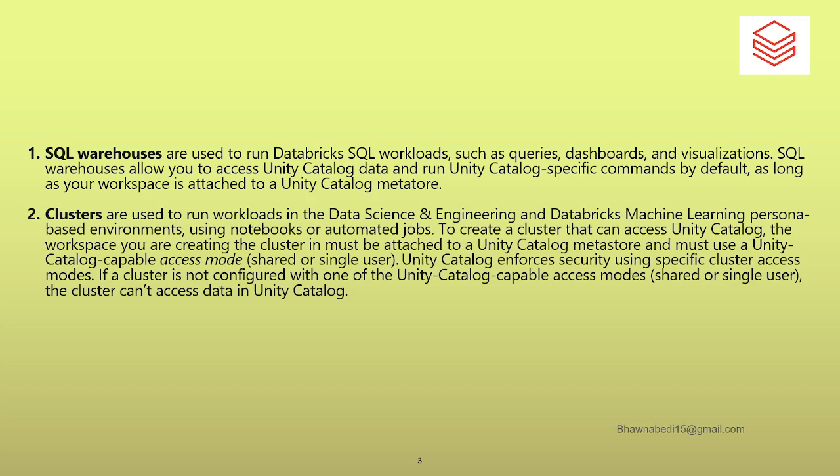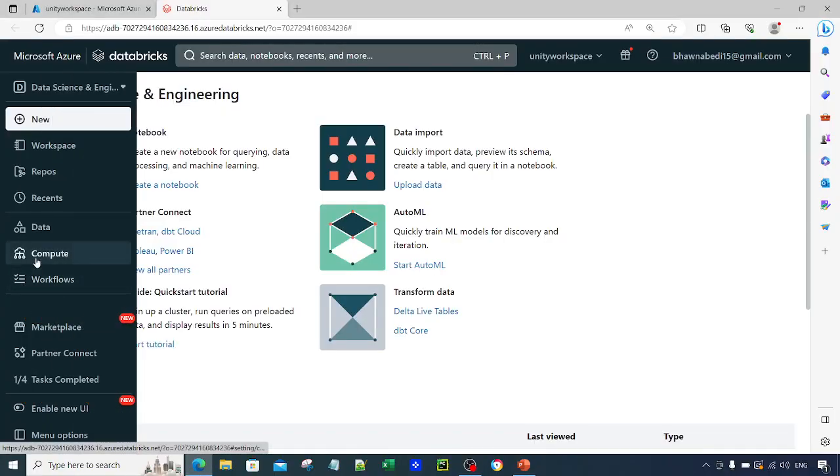When you create clusters, you need to specifically check whether that particular cluster is UC-enabled or not — whether it supports reading Unity Catalog tables. You need to check what access mode your cluster has, whether it is shared or single user, and whether Unity Catalog is enabled. If your cluster does not have Unity Catalog access mode enabled, you will not be able to access Unity Catalog tables.